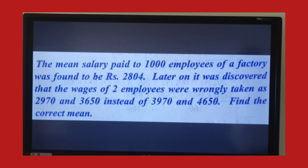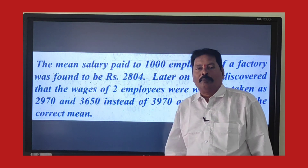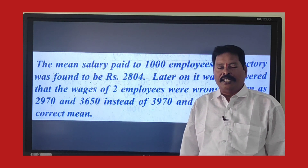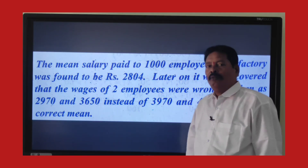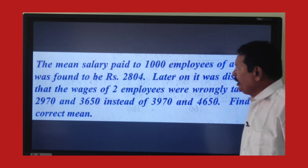When we go through the problem recently given in Vikramasimhapuri University: the mean salary paid to 1,000 employees of a factory was found to be 2,804. Later on it was discovered that the wages of two employees were wrongly taken as 2,970 and 3,650 instead of 3,970 and 4,650. With the above information, find the correct mean. This is an important short question given in so many universities.